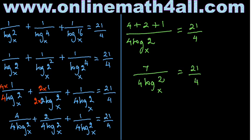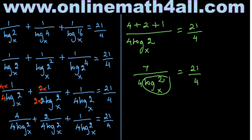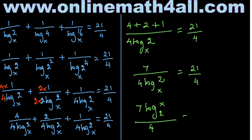We have log 2 to the base X in the denominator. Moving it to the numerator by interchanging the two values — using our trick again — we get 7 times log X to the base 2 over 4 equals 21 over 4. Now I will multiply both sides by 4 over 7 to isolate log X to the base 2.